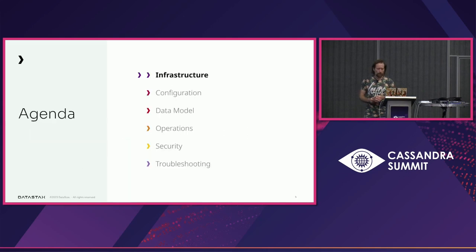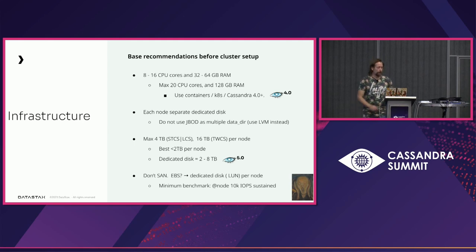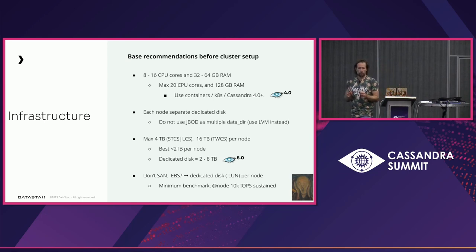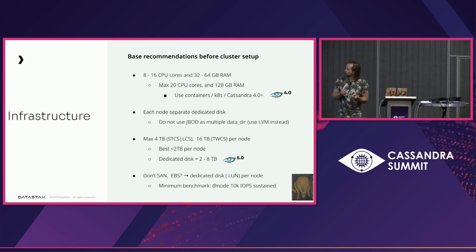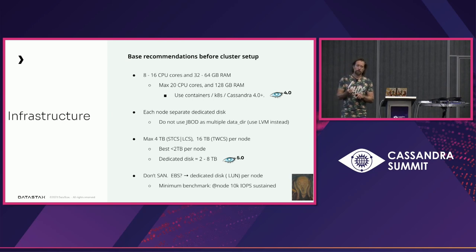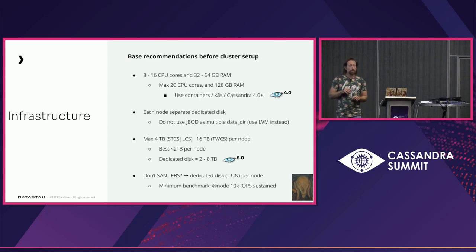First up: infrastructure. Cassandra nodes only really work in a certain range of specs. We recommend 8 to 16 cores and 32 to 64 GB RAM for a production node. If you have nodes over 20 cores or over 120 GB RAM, you're really not going to utilize those machines. The recommendation is to use containers, use Kubernetes — the K8ssandra project, for example — or from 4.0 onwards you can run multiple nodes per host since all ports can be configured.